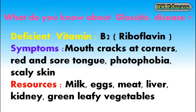What do you know about Glossitis disease? Glossitis disease is due to deficiency of vitamin B2, also called riboflavin. Symptoms include cracks at the corners of the mouth, red and sore tongue, photophobia and scaly skin. Milk, eggs, meat, liver, kidney and green leafy vegetables are resources of vitamin B2.